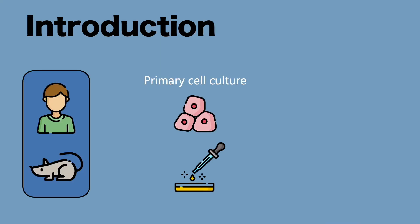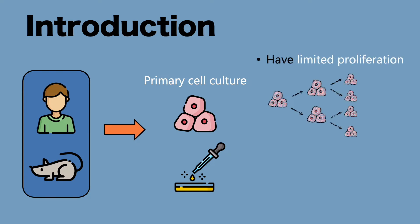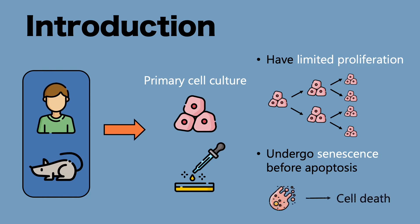As you might know, cell culture is a vital part of biological research. Researchers obtain tissue samples from the subject of their research and culture them in media to get the primary cells. However, primary cells are known to have limited proliferation, and they also die through a process called apoptosis after going through cellular senescence.